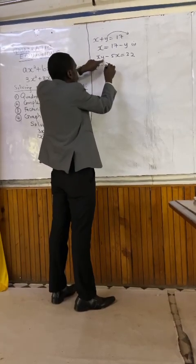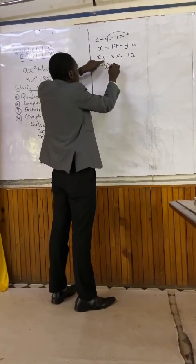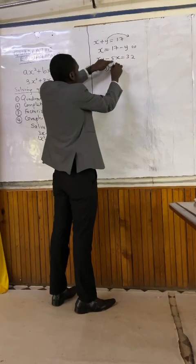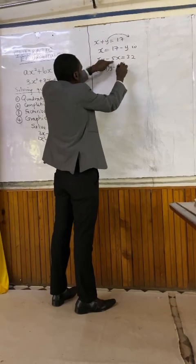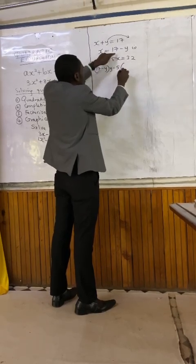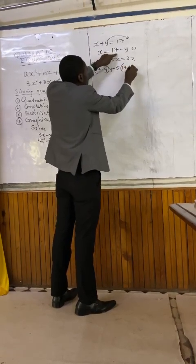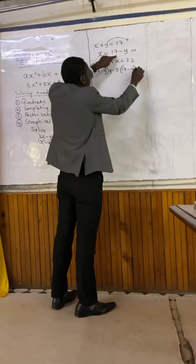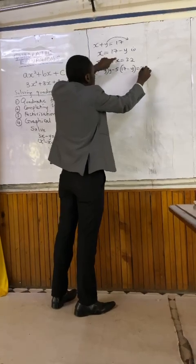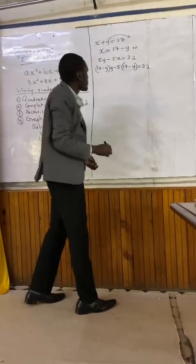Then what is outside? Less 5 into, again, the equation for x: 17 minus y. The answer must be 32.